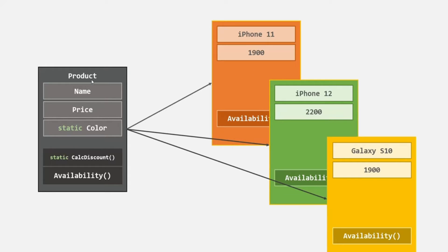We don't have to access static properties or methods on an instance. We can access them using the class itself. So name and price here are instance properties — accessible on the instance. Color is a static property. Instance properties are those which can be accessed on an instance of a class, but static properties are those which we access on the class itself. The same is true for methods. The availability method is an instance method because we can access it on the instance. But calc discount is a static method — we cannot access it on the instance because the instance does not contain a definition for it. Instead, we access it on the class itself.